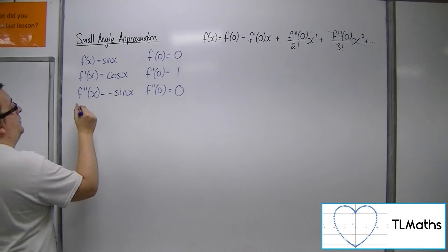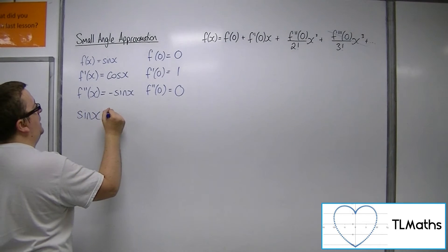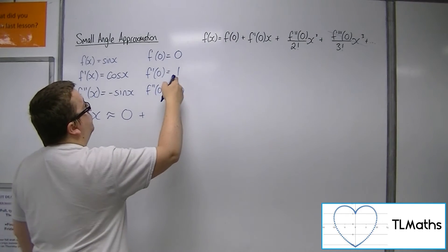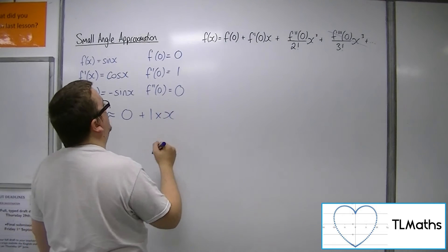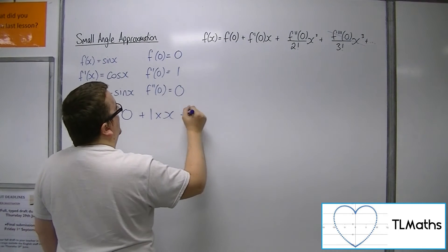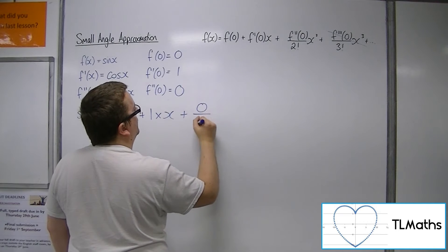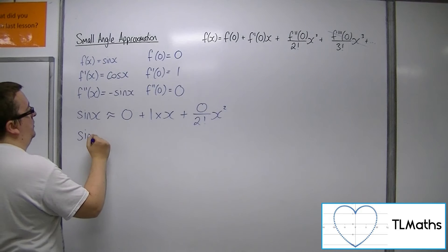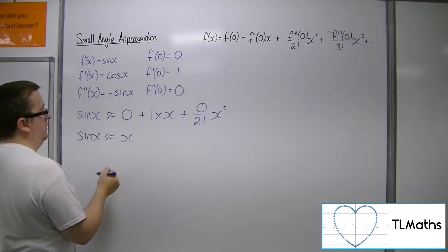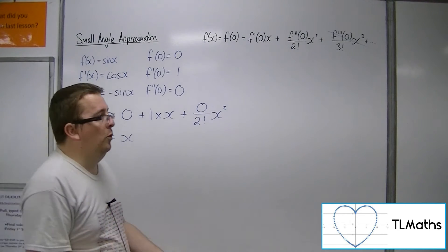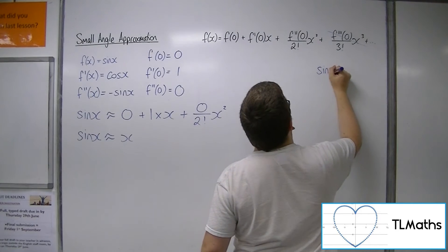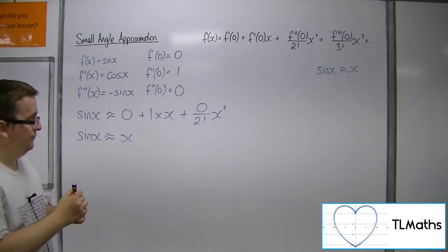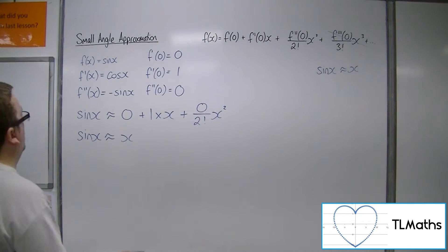So what we get is that sine x is approximately f of 0, which is 0, plus f prime of 0, which is 1, times x, plus f double prime of 0, so 0 over 2 factorial x squared. And so what we get is that sine x is just approximately x, and that is my small angle approximation for sine. Or sine of theta is approximately theta. That is how it works for sine.